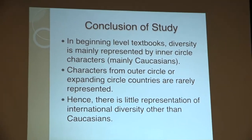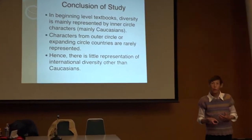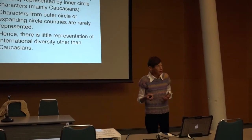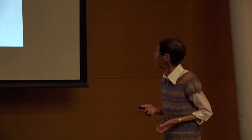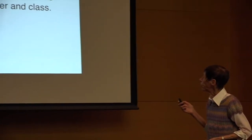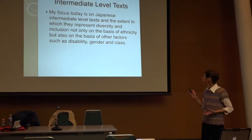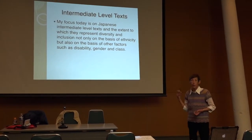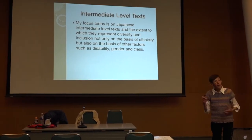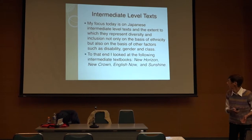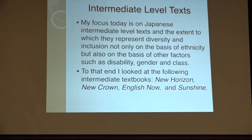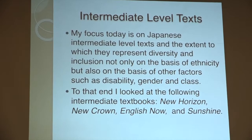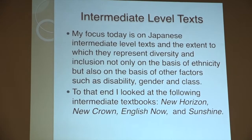I was curious about what has happened since 2002. I took textbooks that are fairly widely used and looked specifically for the diversity in them — intermediate-level texts — looking not only at ethnicity but also at other factors such as disability, gender, and class. I looked at New Horizons, New Crown, English Now, and Sunshine. These were not a scientific study, but they are approved by the ministry and widely used.